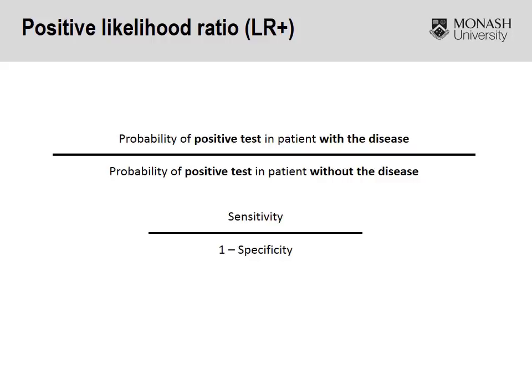As we mentioned in one of the earlier videos, sensitivity and specificity never change, whereas predictive values are limited to a large extent on the prevalence of the disease or condition that we're investigating, which limits the generalizability of applying predictive values to different contexts. Likelihood ratios don't rely on predictive values, and hence, hopefully over the next few slides, we'll show why they're more powerful from that point of view.